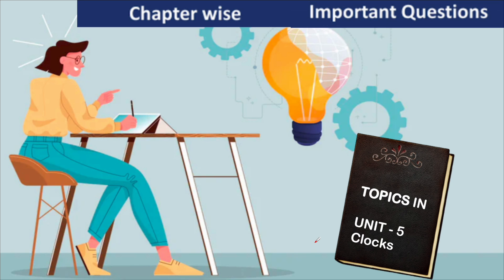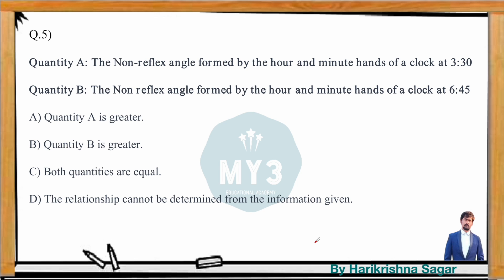We're looking at questions related to clocks. In this GRE-style question, two quantities are given and options are in the form of a comparison: Quantity A is greater, Quantity B is greater, both are equal, or the relationship cannot be determined. Quantity A is the angle between the minute and hour hands at 3:30, and Quantity B is the angle at 6:45.